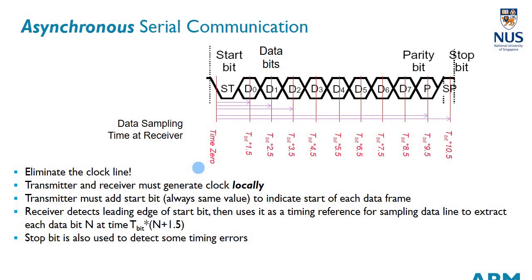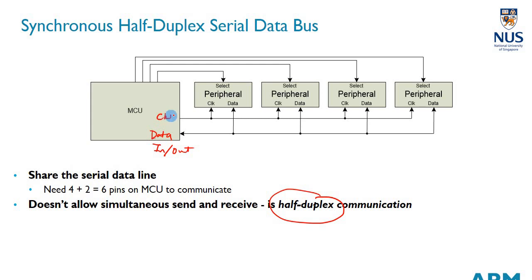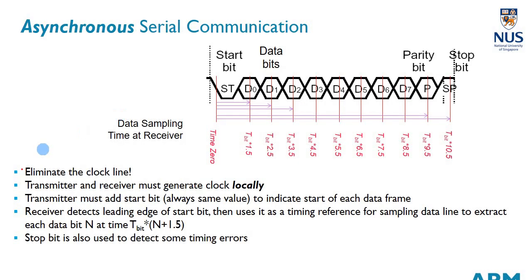Now let's look at asynchronous serial communication. The main difference between synchronous and asynchronous is that in synchronous communication a clock signal is transmitted together with the data. In asynchronous communication, there is no clock at all — only one line to transmit and one to receive. Everything must still be aligned to some clocking frequency, so the clock must be generated locally by both the transmit and receive devices.